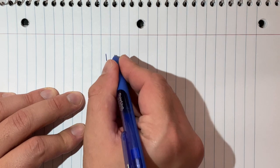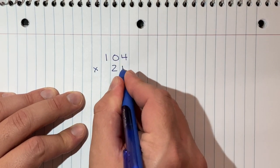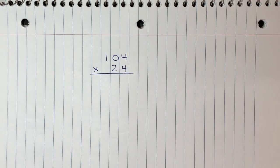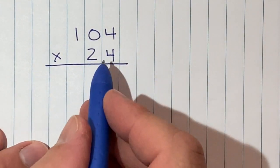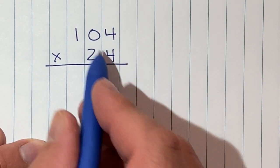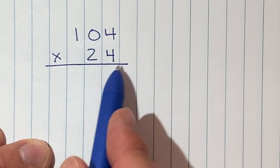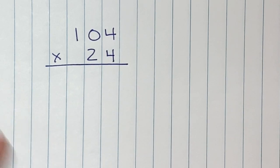I'm just going to write 104 times 24. If you notice, I'm writing the digits in between the blue lines. My digits are not on the blue line or touching the blue line, the digits are in between the blue lines.